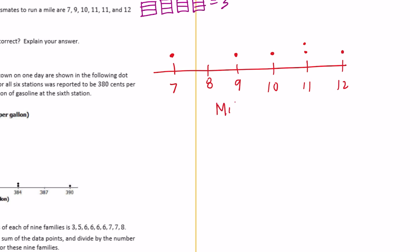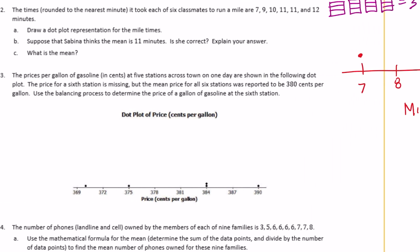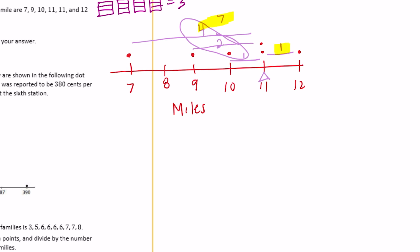Part B says suppose Sabina thinks the mean is eleven minutes — is she correct? From twelve to eleven is only one, and from ten to eleven is one, but we still have nine and seven to account for. The distance from seven to eleven is four, nine to eleven is two, and ten to eleven is one — those add up to seven on the left. The right side is only one, so they are not equal, meaning eleven is not the mean.